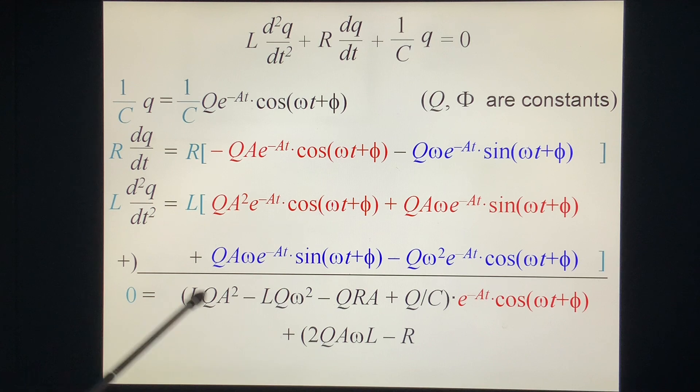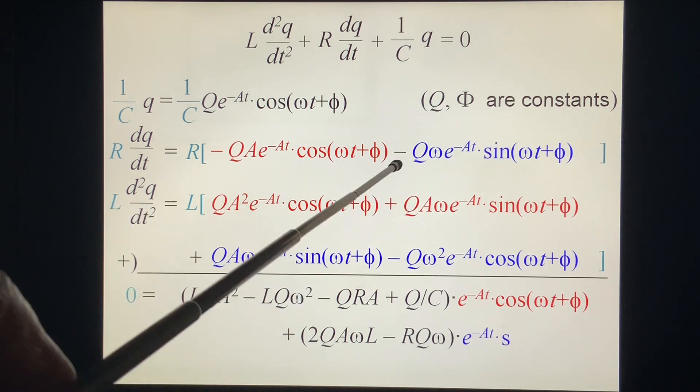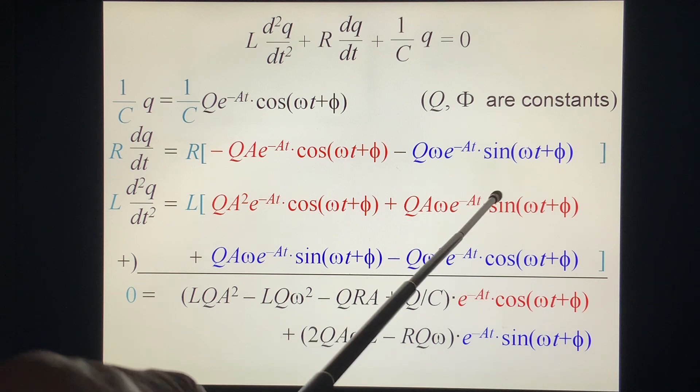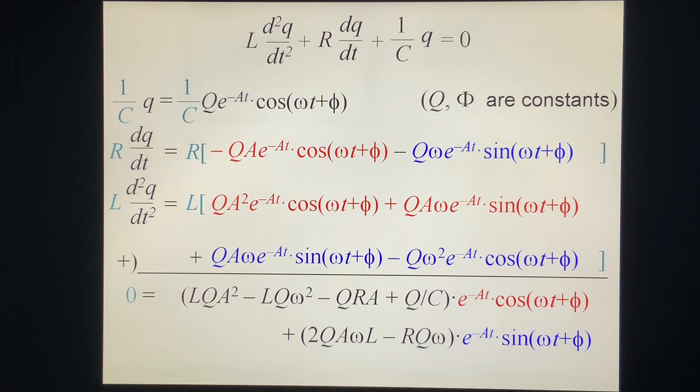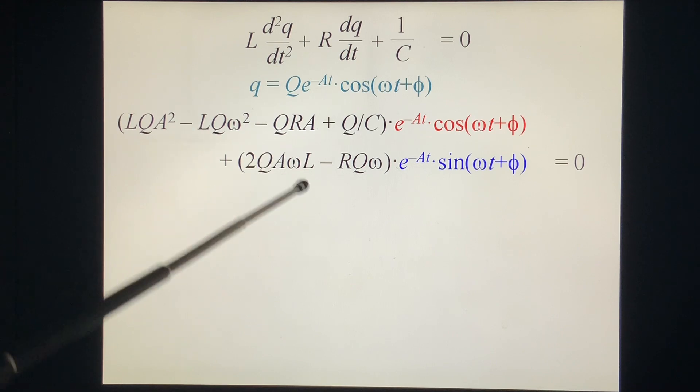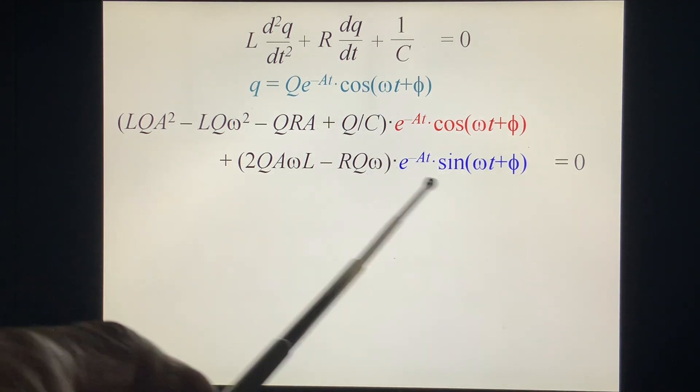And then we have sine. Look at the sine, minus Qω R, and this sine and this sine, they are the same, so 2QAωL. This equation should be equal at any time, so t can be a lot of numbers. This should always equal zero. So what can we get? We can guess the only chance is the coefficient in front of this is zero. So we put them together, we get the answer. The only chance we can have an answer is the coefficient in front of this complicated stuff is zero.